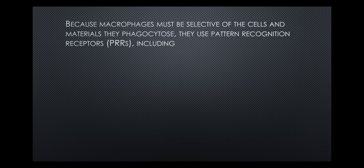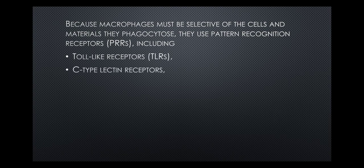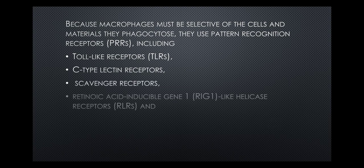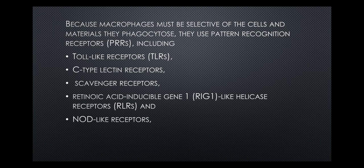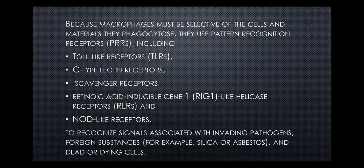Because macrophages must be selective of the cells and materials they phagocytose, they use pattern recognition receptors. These include Toll-like receptors (TLRs), C-type lectin receptors, scavenger receptors, retinoic acid-inducible gene-1-like helicase receptors, and NOD-like receptors — to recognize signals associated with invading pathogens, foreign substances, and dead or dying cells.